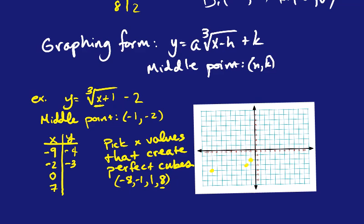0 goes in. That's 1. So it's cube root of 1, which is 1. And then 1 minus 2 is negative 1. And then last one. 7 goes in. That's 8. Cube root of 8. That's 2. 2 minus 2 is 0.